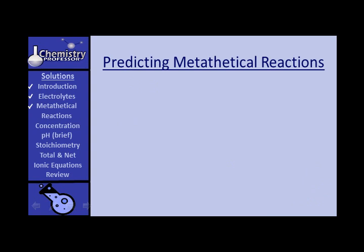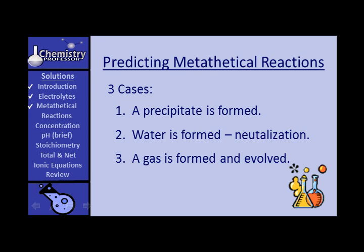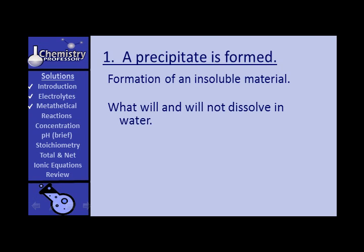Let's see how we would predict metathetical reactions. There are three cases. The first case is when a precipitate is formed — an insoluble material has been produced. The second case is when water is formed in a process called neutralization. The third case is when a gas is formed and given off. Let's look at the first case — a precipitate is formed.